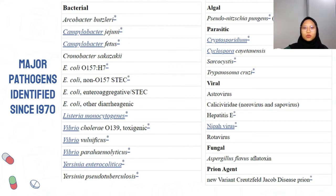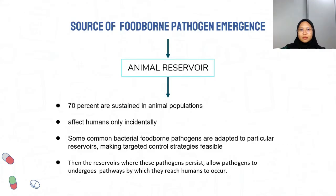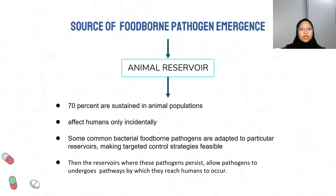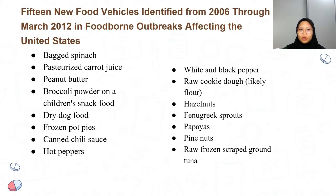How are new and emerging foodborne pathogens increasing? Foodborne pathogens often emerge from animal reservoirs — 70% are sustained in animal populations and affect humans only incidentally. Some common bacterial foodborne pathogens are adapted to particular reservoirs, making targeted control strategies feasible. These reservoirs allow pathogens to undergo pathways by which they reach humans. As the foodborne pathogen count increases, so do the vehicles of infection.